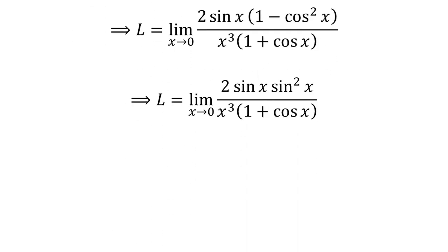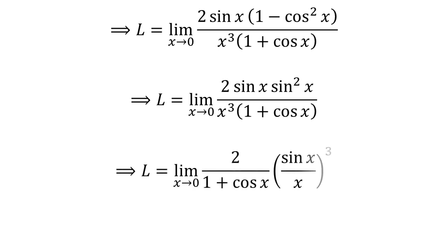We know 1 minus cosine squared of x is equal to sine squared of x. Here I have applied this identity. So I can express the above statement as L is equal to limit of 2 upon 1 plus cosine of x times the cube of sine of x upon x as x approaches 0.